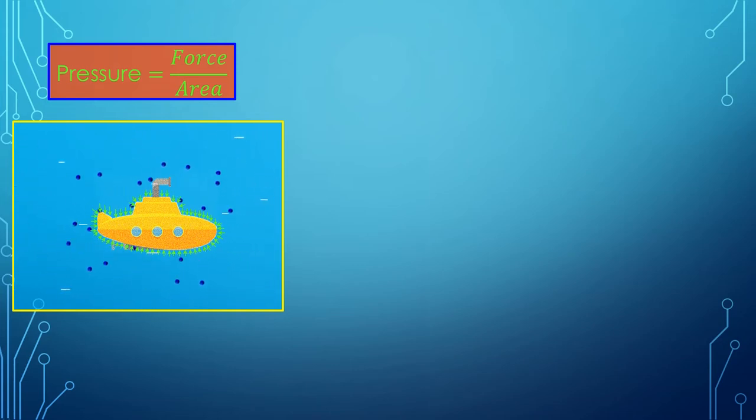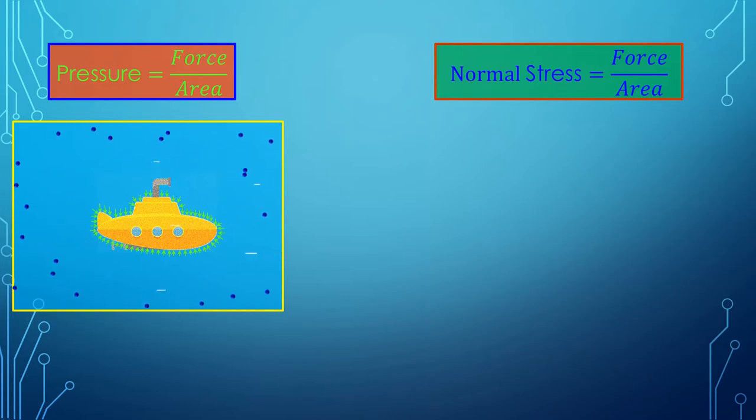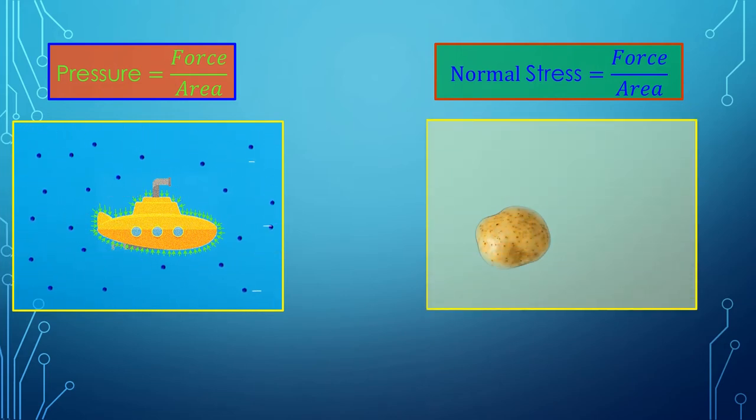A term similar to pressure used for solids is normal stress. If we take a knife and cut a potato, the force applied by the knife edge normal to the potato surface divided by the surface area of potato in contact with the knife edge will give us the normal stress.